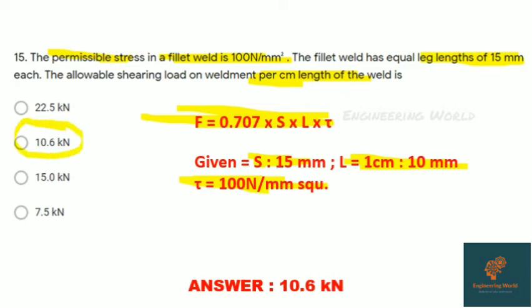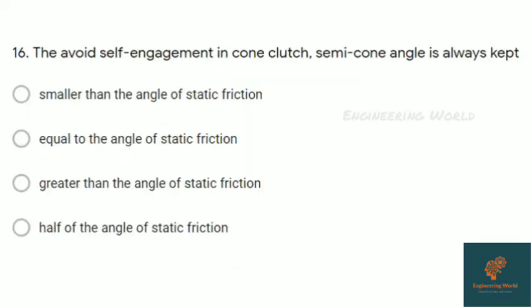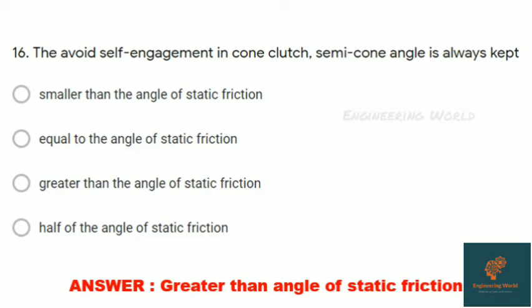Question sixteen: To avoid self-engagement in a cone clutch, semi-cone angle is always kept greater than angle of static friction. This is a straightforward question; remember this.